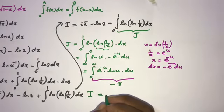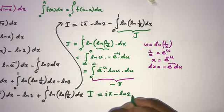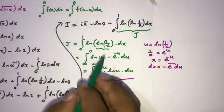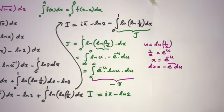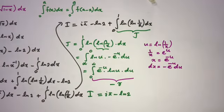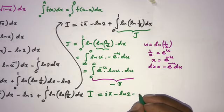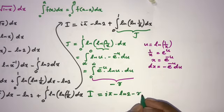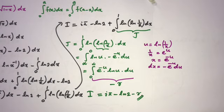Therefore, the final answer is I = iπ − ln(2) − γ, where γ is the Euler-Mascheroni constant. If you liked this video, please subscribe to the channel. Thank you for watching.